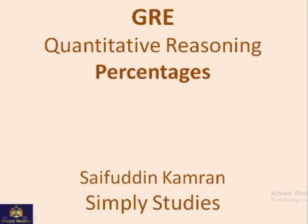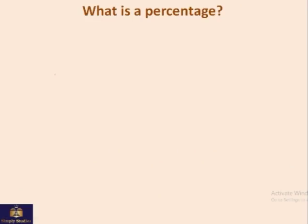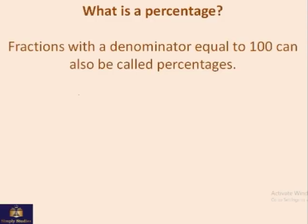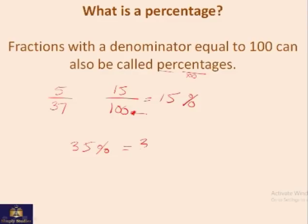In this video on GRE quantitative reasoning, we will discuss percentages. What is a percentage? We've done fractions, so if we have a fraction like 5 over 37, it's a simple fraction. But if we find a fraction in which the denominator is 100, this can also be written as 15 per 100. So percentages are just fractions with 100 in the denominator. If somebody says 35%, it just means 35 out of 100.